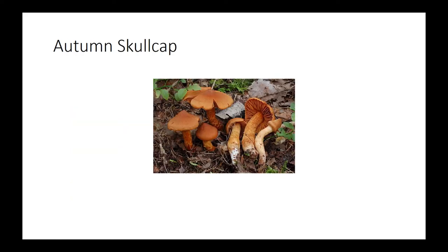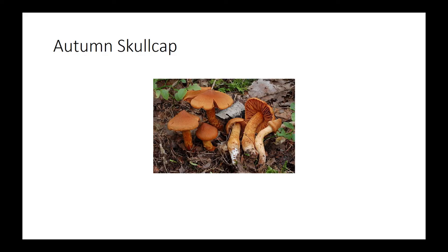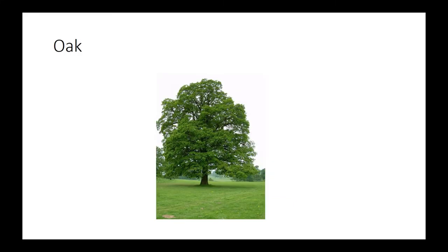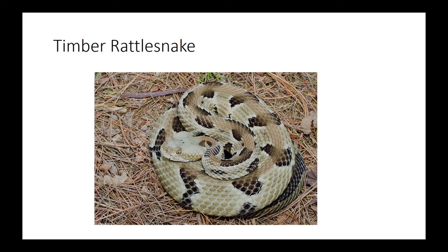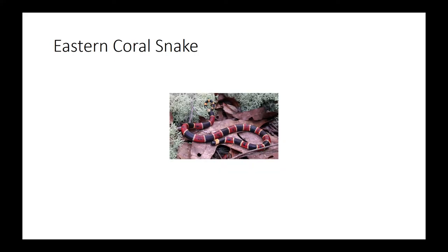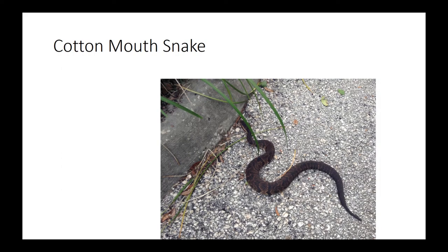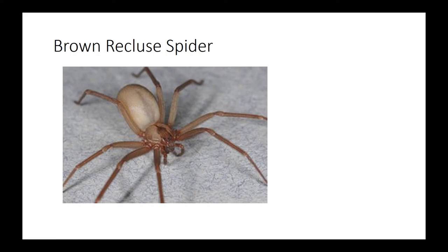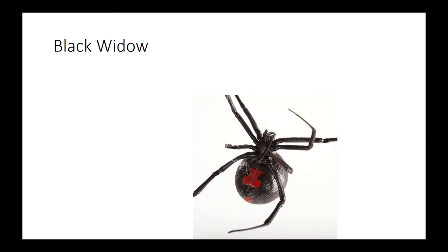Autumn skullcap, which are mushrooms that look like autumn, so they're like orange. Henbane, oak. So the first of the three snakes. We have timber rattlesnake, eastern coral snake, and cottonmouth snake. I skipped one. We have brown recluse spider, which is from last year, and then we have black widow, which should be not hard to identify from that marking.